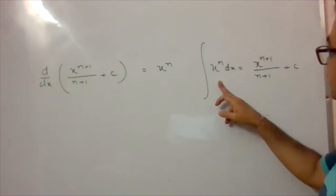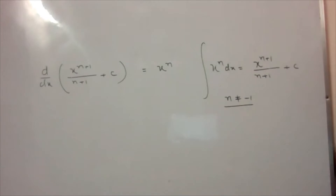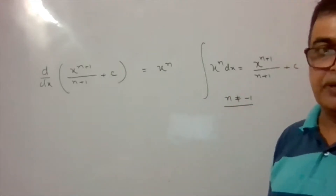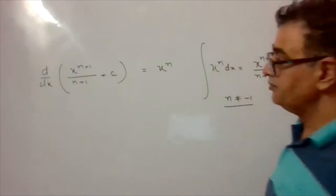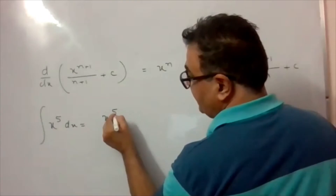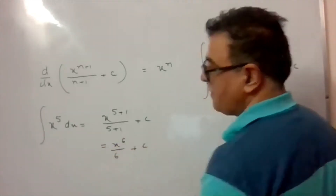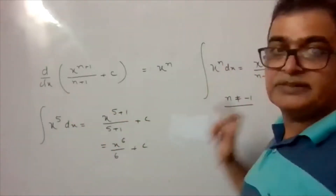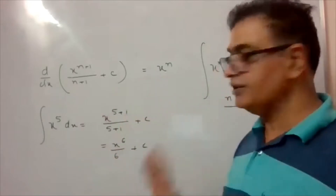Integration of x^n equals x^(n+1)/(n+1) + C. This formula is only valid when n is not equal to -1, because putting n = -1 makes the denominator zero (giving infinity). For example, integration of x^5 dx = x^6/6 + C.